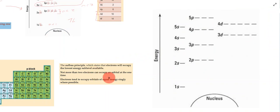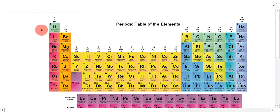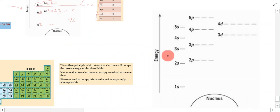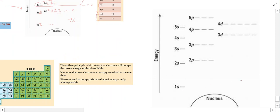There are a couple of principles to take into account when figuring out the arrangement of electrons for particular elements. Let's look at a particular example — hydrogen. Hydrogen is the first atom on the periodic table; it has one proton and one electron. The Aufbau principle states that electrons will occupy the lowest energy sub-level available. Imagine a hydrogen atom with its one electron — will it hang out far away from the nucleus, or close to it?